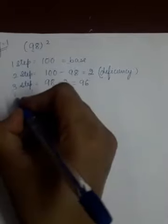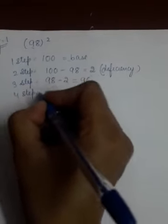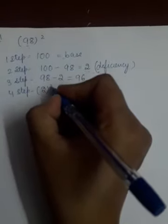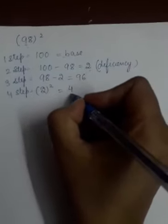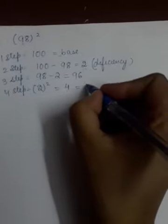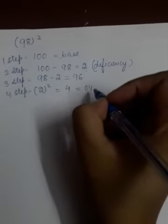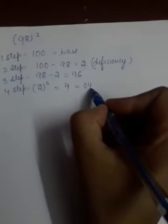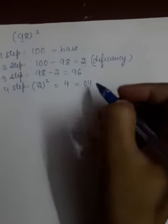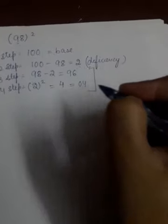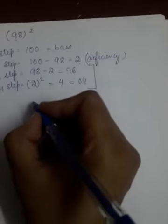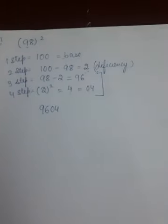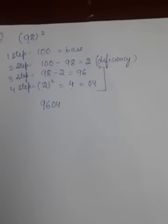Now step number 4. What is the deficiency? 2. You will do the squaring of this 2. We get 4. But you will not write 4 like this, you will write 04. Why? Because the base 100 has two zeros. So you have to make two digits. Now compile the answer from step number 3 and step number 4. The answer is 9604 which is the answer for square of 98.